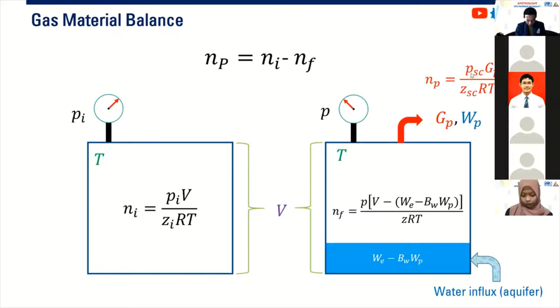And then the other is in SC, which is standard condition. So after we divide this case like this, we can calculate the final or the remaining moles of gas in the reservoir NF, which is calculated by this formula.